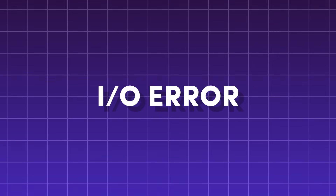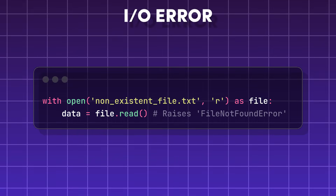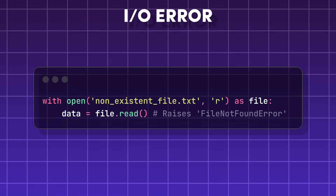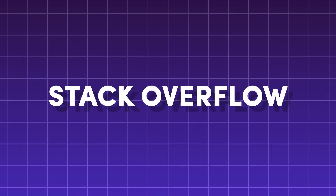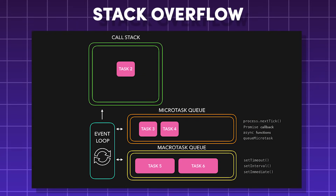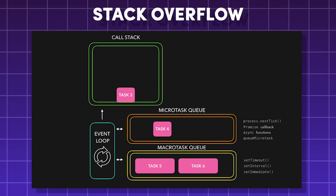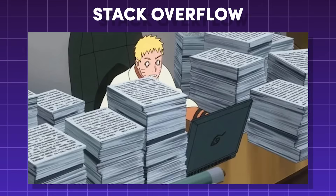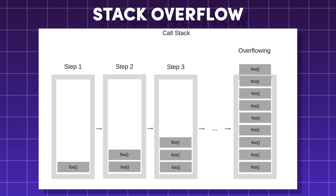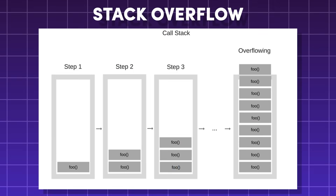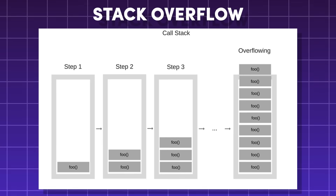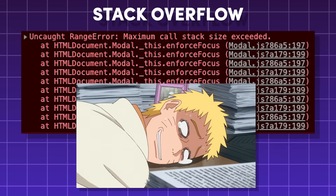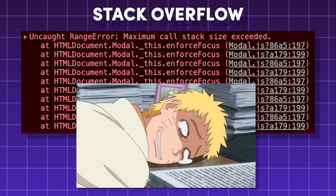Input/output error — this happens when a program tries to access a file that either doesn't exist, is corrupt, or lacks permissions. Stack overflow — the call stack is a special place in memory that tracks all the functions you plan to use, kind of like a stack of paperwork to do. However, if the call stack goes beyond the maximum limit, the program becomes too overwhelmed and then crashes.